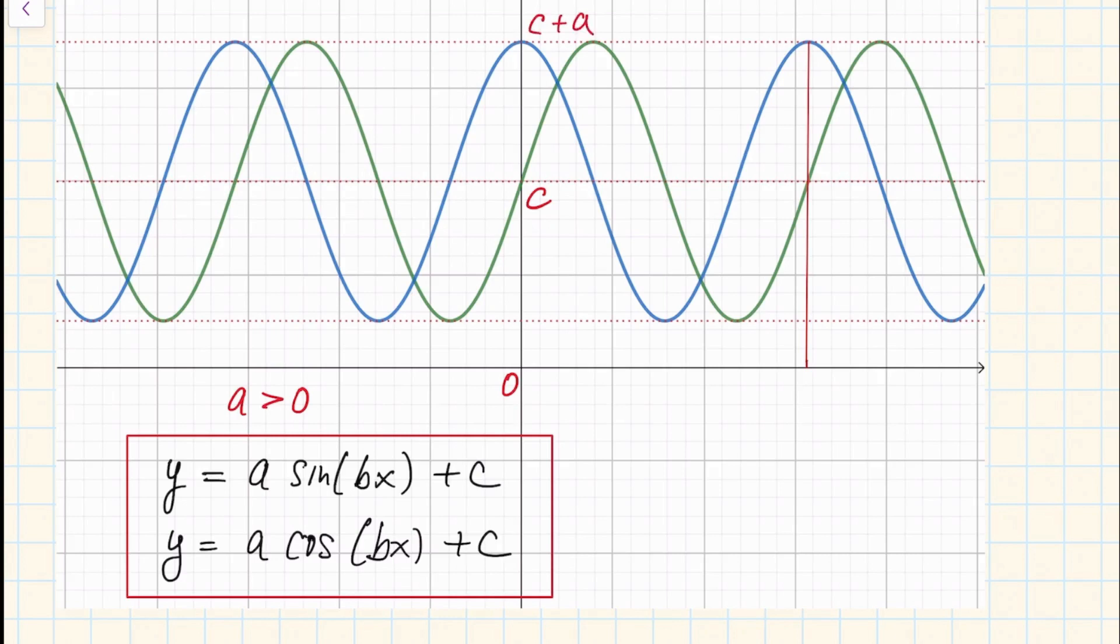This minimum value will be c minus a, and in particular the amplitude A, which is just the difference between the maximum value and the minimum value, in this particular case will be equal to 2a. So you can find this constant a just by taking the amplitude and dividing it by 2. Finally, to find this constant b we can take a look at the period T.